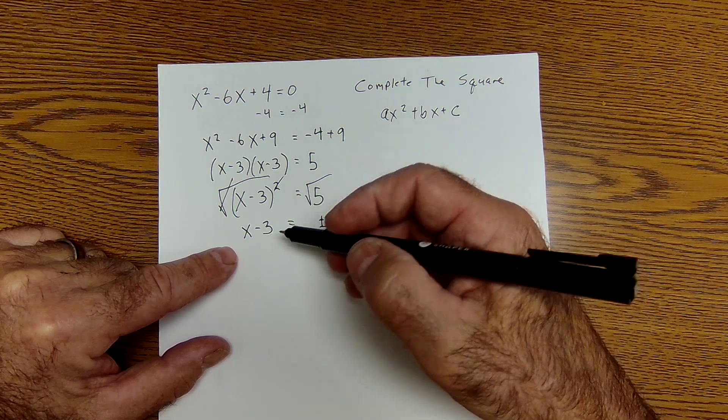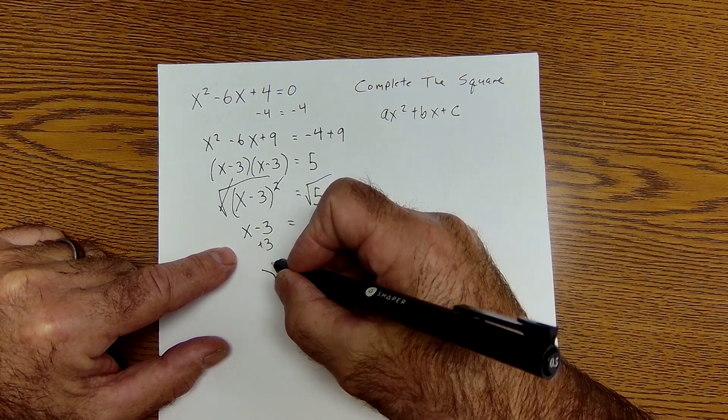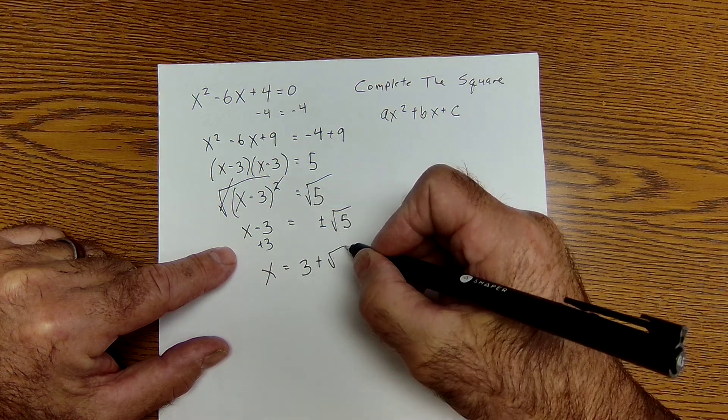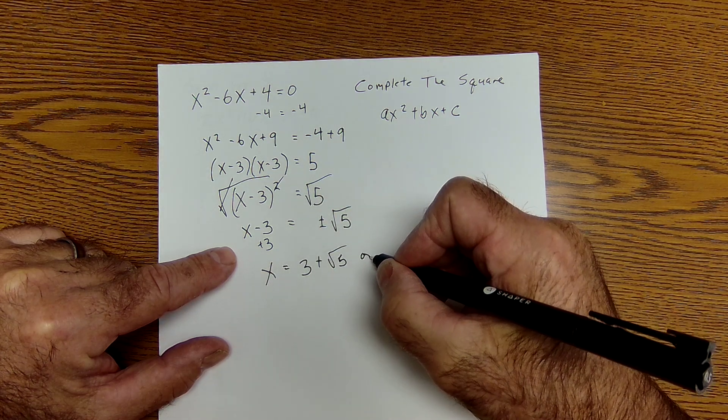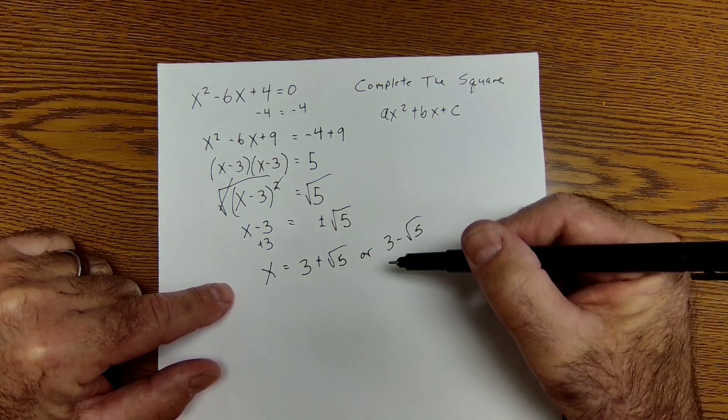Solving for X, I add 3 to both sides, and I get X equals 3 plus root 5 or 3 minus root 5. Those are my two solutions.